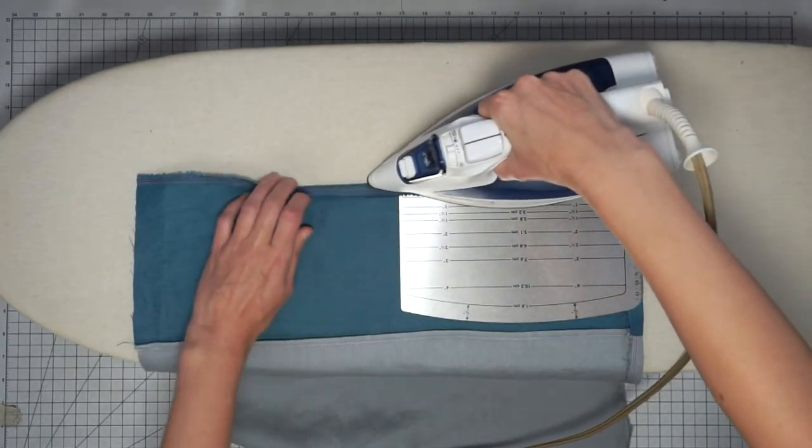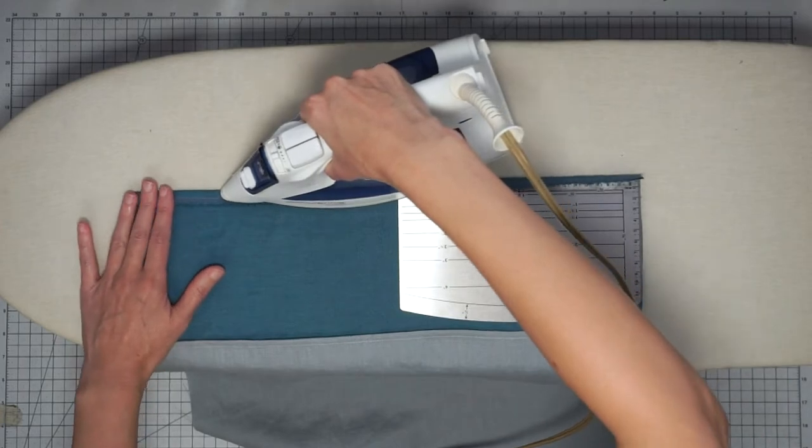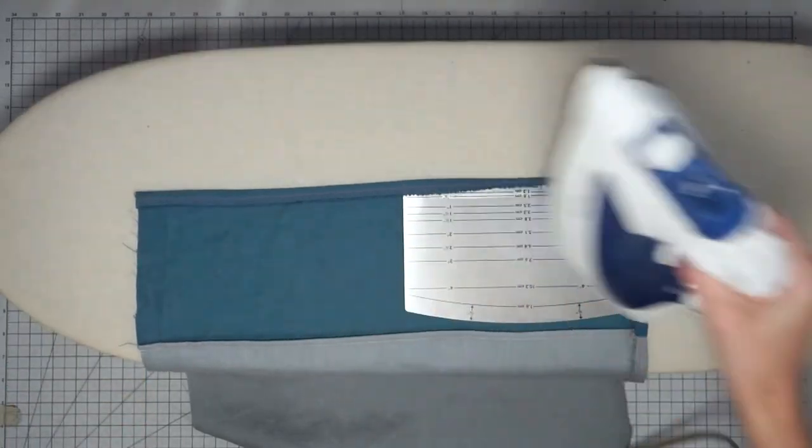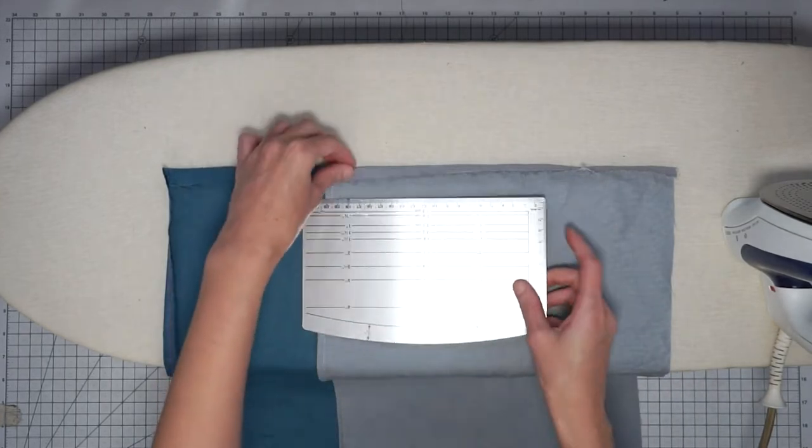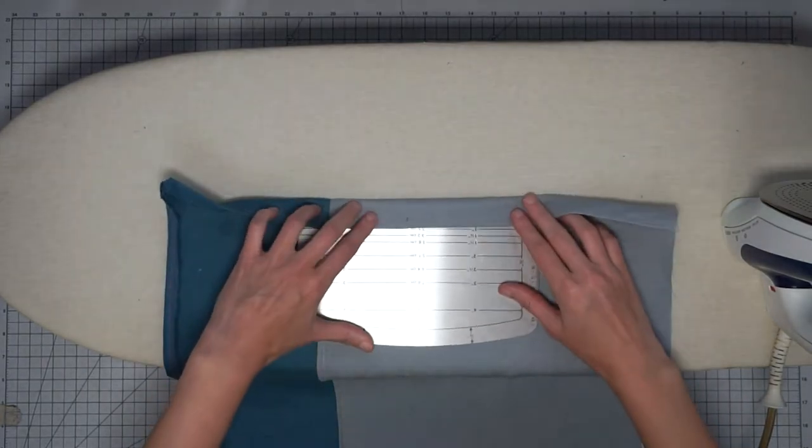Okay, so you just fold all the sides one half inch, and then you want to do your second fold. My second fold is going to be one inch, so just fold that down.